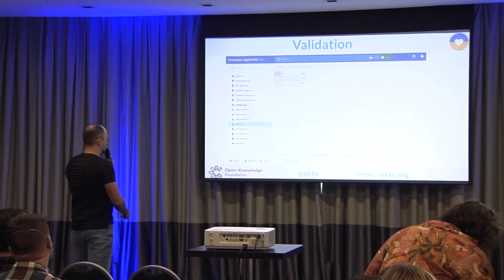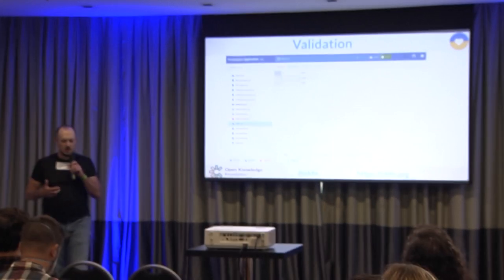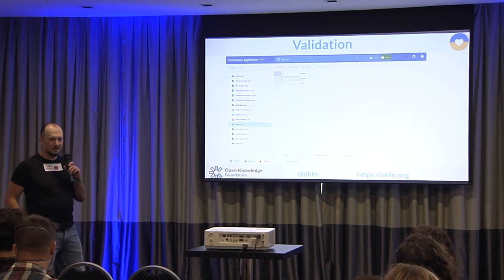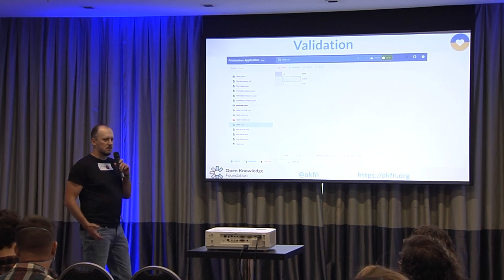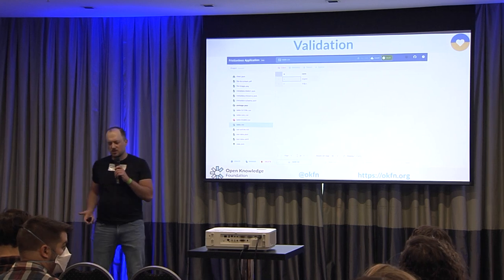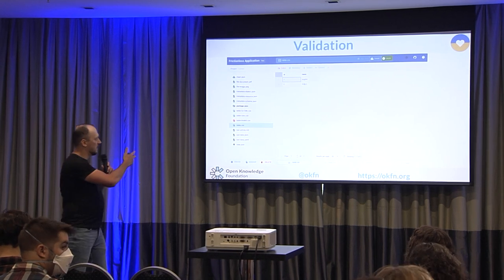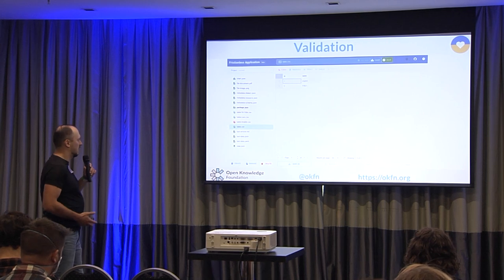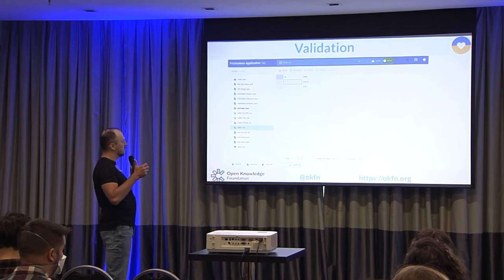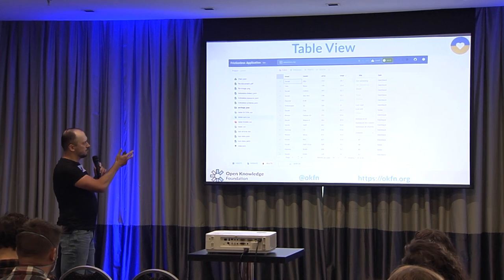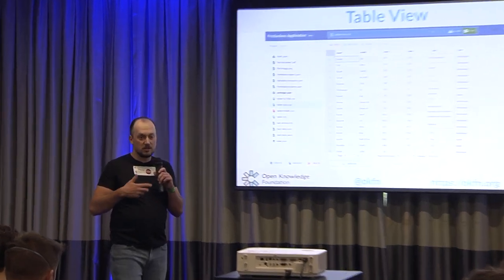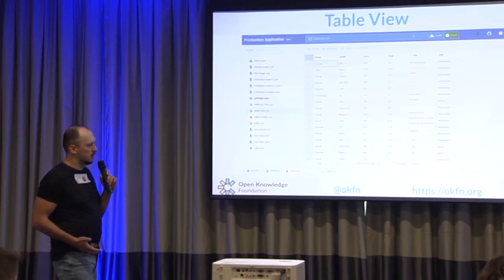It just validates your data with a single click. Validating means that behind Frictionless — and Lily worked a lot on it — we have a sophisticated validation system detecting tabular errors and metadata errors. But here it's just one click and you get the status of your data. Tables get indexed into a SQLite database, and you can do any exploring — sorting, filtering, whatever — just like a normal data viewer.